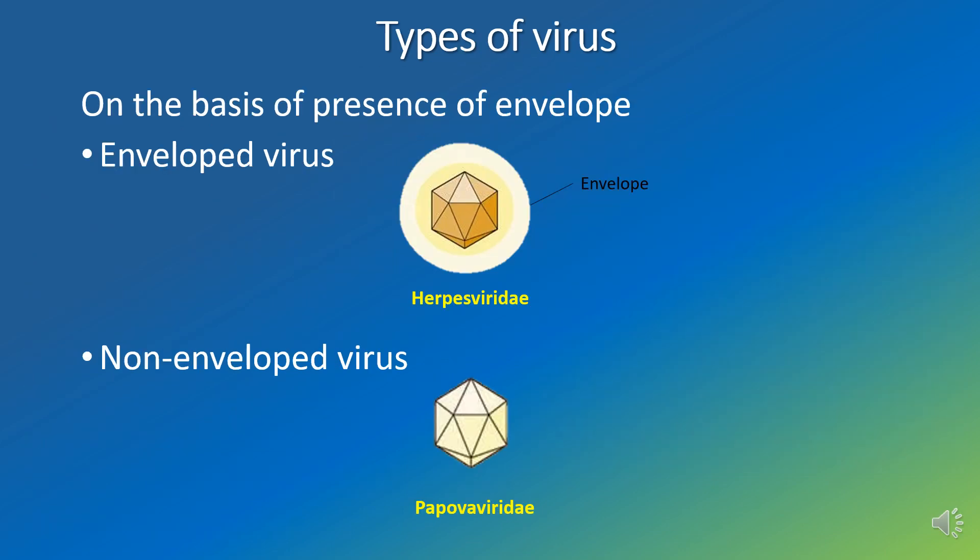Types of virus on the basis of presence of envelope: there are two types of viruses. The first is enveloped virus and the other is non-enveloped virus. If the envelope is present around the protein coat, it is called an enveloped virus — example is herpesviridae. If the envelope is absent in the virus, that is called a non-enveloped virus — example is papovaviridae.